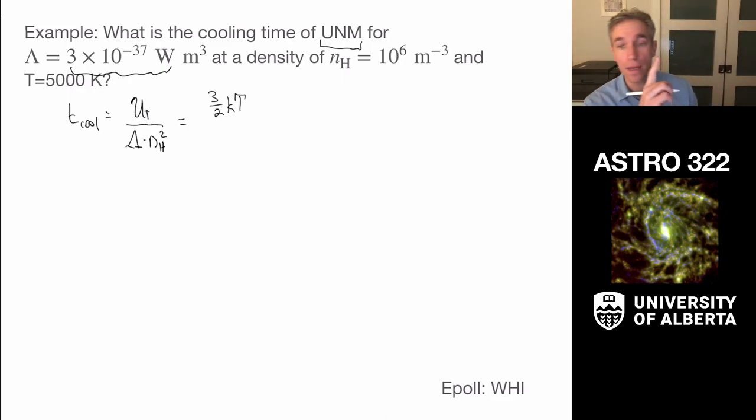And the thermal energy per unit volume is going to be 3 halves kT, which is the thermal energy per particle at temperature T. And then per unit volume, I just multiply it by the number of particles per unit volume. So it's 3 halves n kT,